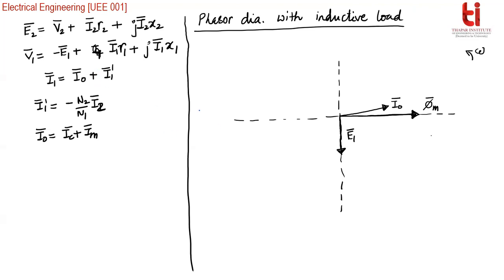The effect of mutual flux on the primary side produces an EMF called capital E1 bar, and E2 bar will also come in the negative y-axis. Now after drawing these three quantities, we need to build the secondary side phasors according to the load conditions. I am drawing load voltage V2 at an arbitrary position in the third quadrant.